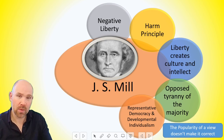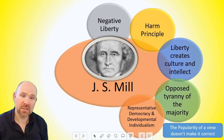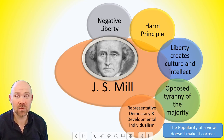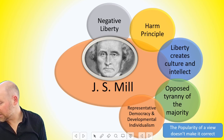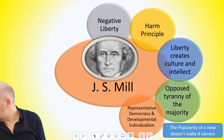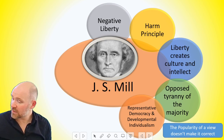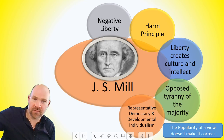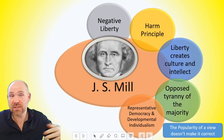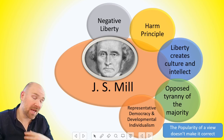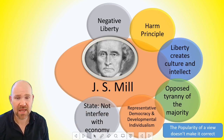Mill opposes the tyranny of the majority and argues that we should have a representative democracy and developmental individualism. A representative democracy is where we all vote but we vote for someone to represent all of us, and that person should think about both the majority and the minority when making decisions — decisions in the best interests of everyone rather than just following what people might want. Think about want versus best interests. Developmental individualism, as opposed to egotistical individualism, is the concept that links individual freedom with the creation of a society where every human can experience personal growth and achieve their potential.